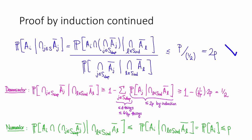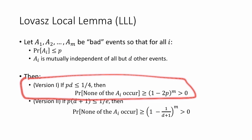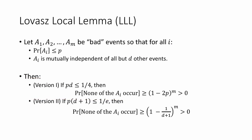So this proves the helper lemma, and thus the whole Lovász Local Lemma. To recap, we just proved version 1 of the Lovász Local Lemma. The proof of version 2 is similar. That's it for this video. Thanks for watching.